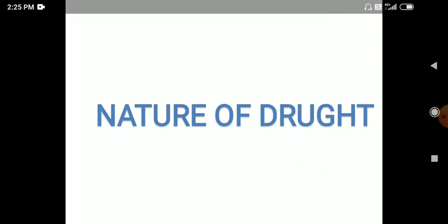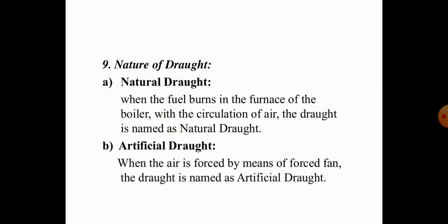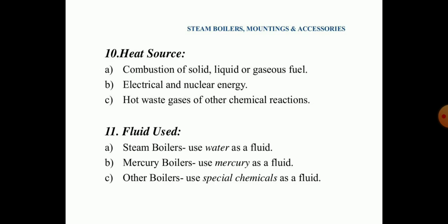Today we see the nature of the drafts. While generation of steam in the boilers, the draft plays a vital role. According to their nature, drafts are mainly of two types: natural drafts and artificial drafts. When the fuel burns in the furnace of the boiler with the circulation of air, such drafts are named as natural drafts. When the air is forced by means of a fan, the draft is called an artificial draft.